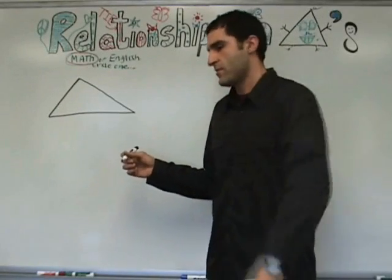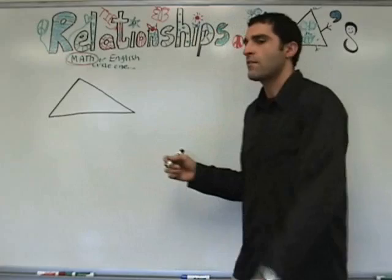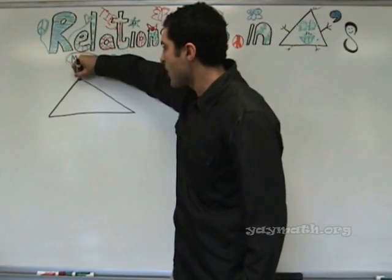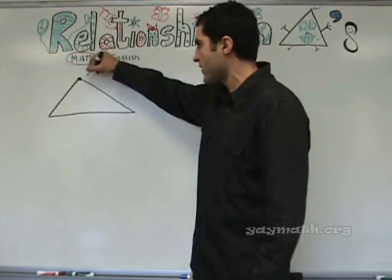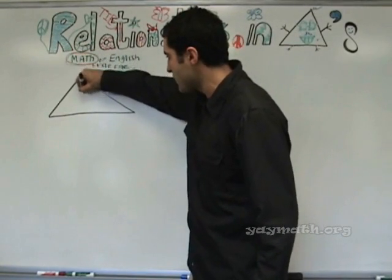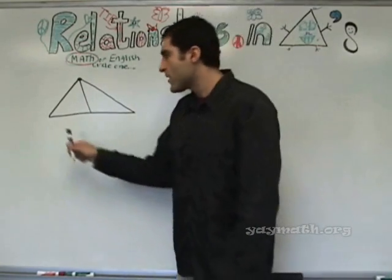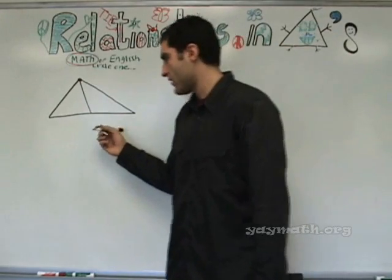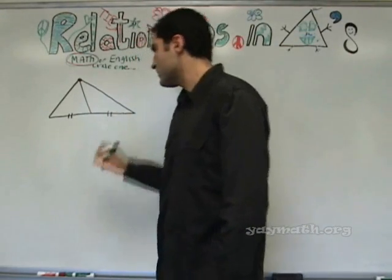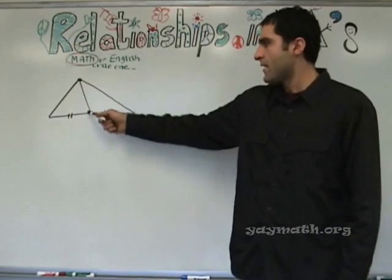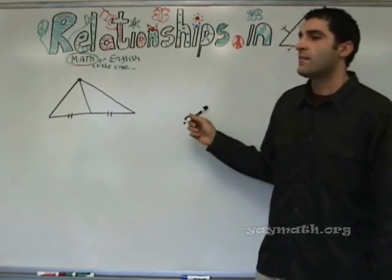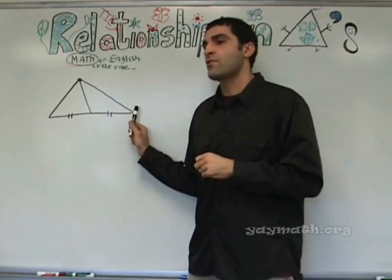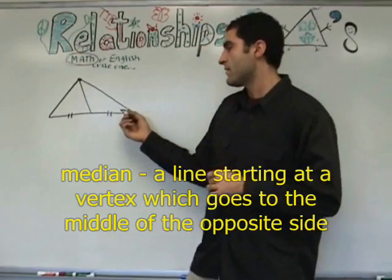We're going to do four definitions. The first definition has to do with when you start at a point — a vertex of any triangle — and you go to the middle of the opposite side. This line has a specific name. It is bisecting this line, but it has a specific name. Is it a median? It's called a median.